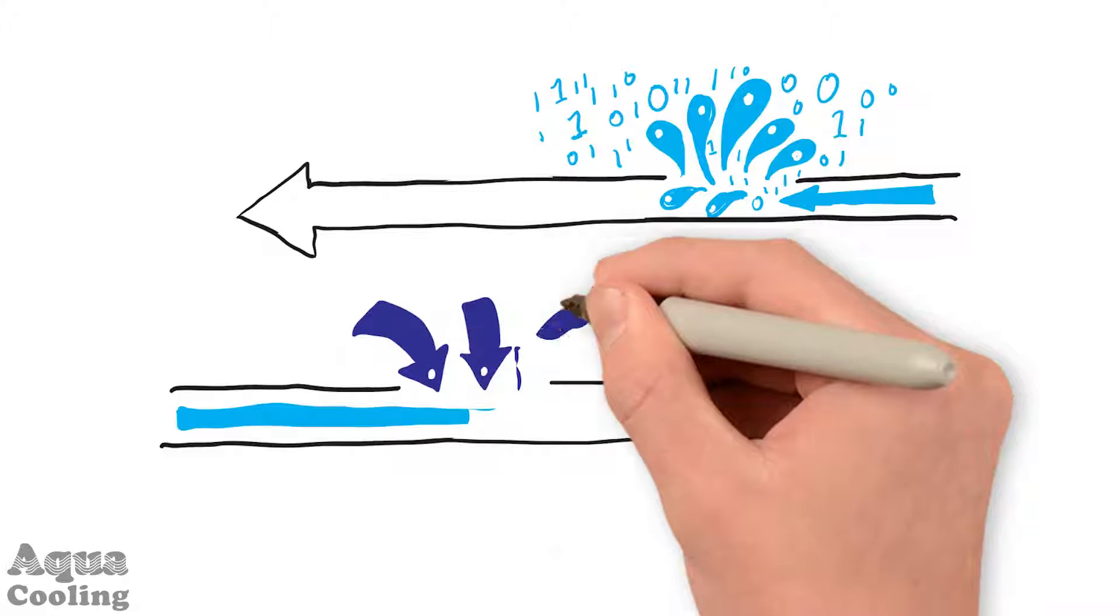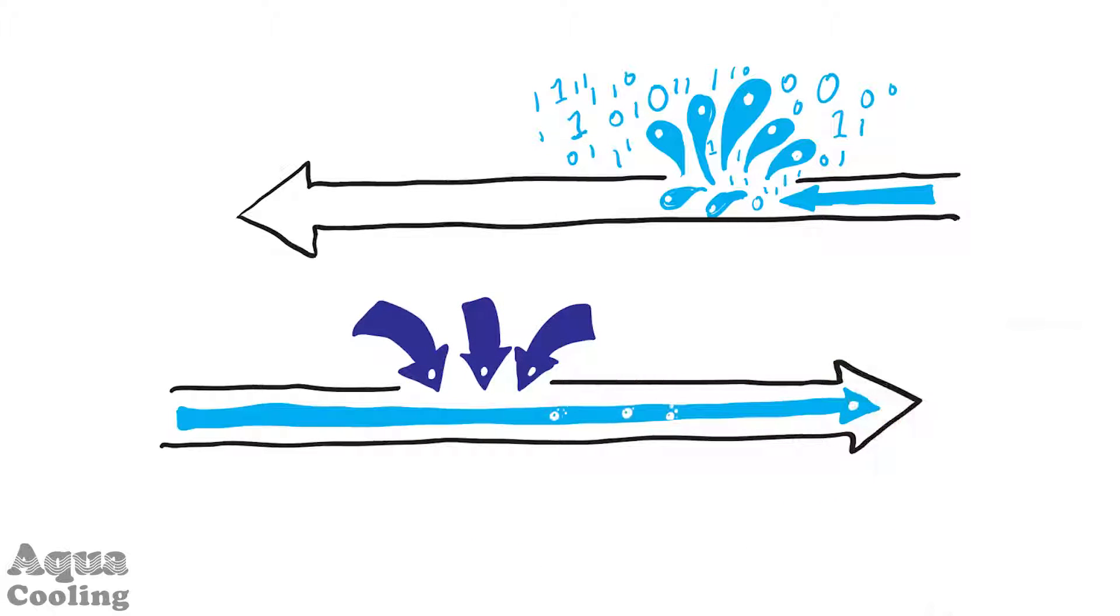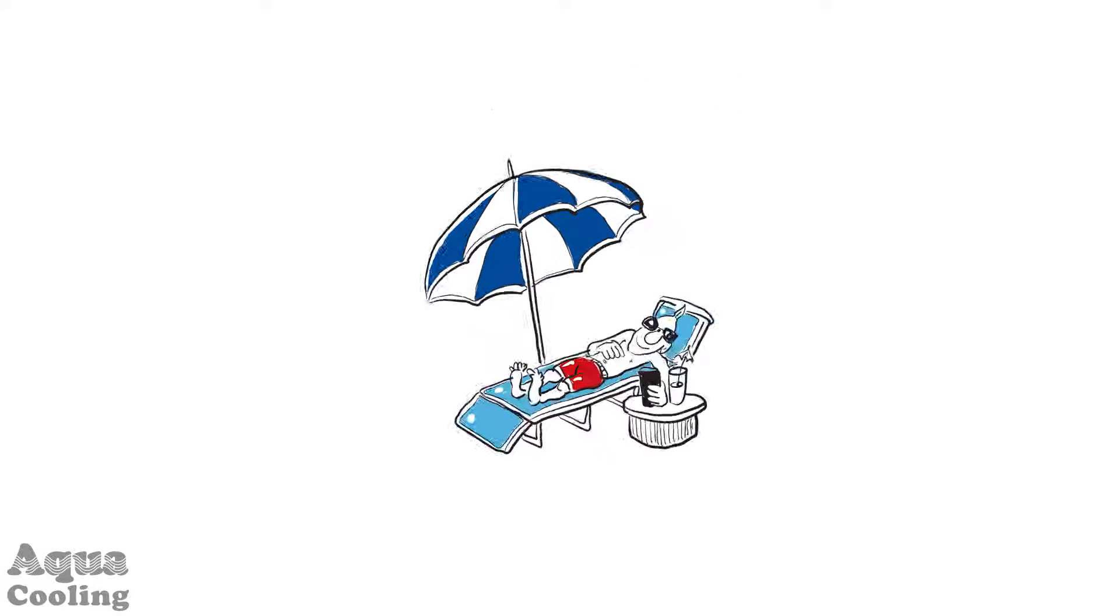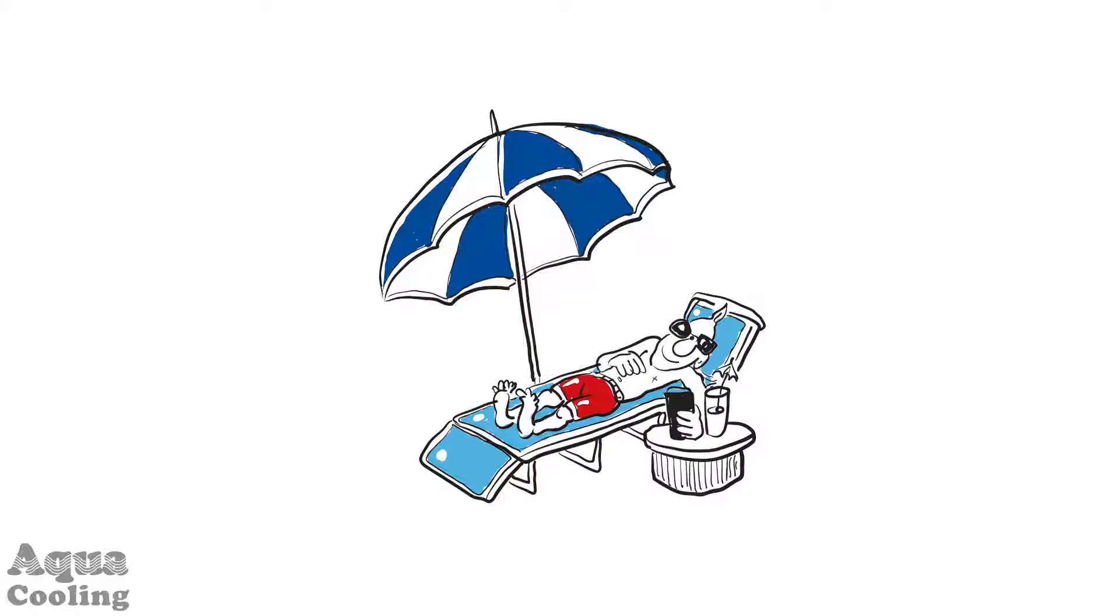instead it sucks air in. This air is sensed, removed outside the data center, and the LPS continues to circulate the water, keeping your systems working during any leak. This keeps your clients happy, as they never even knew there was a problem.